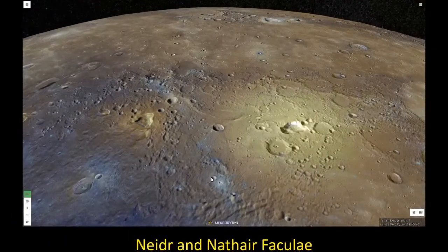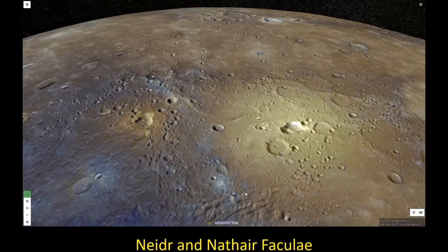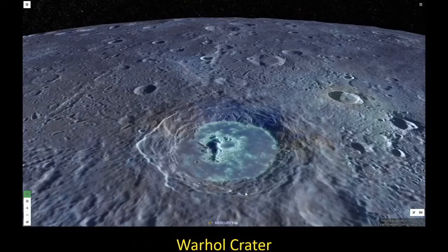We see impact craters all across Mercury, but also irregularly shaped craters sometimes surrounded by ash deposits — these are pyroclastic volcanic vents, areas of volcanic activity on Mercury, and they're actually quite common. In a number of the impact craters we see bright crater floor deposits, also called hollows, where volatile minerals have been turned to gas by the intense heat of Mercury.